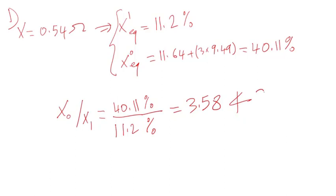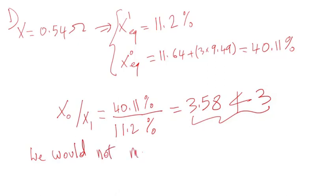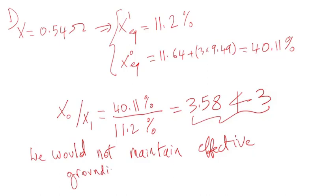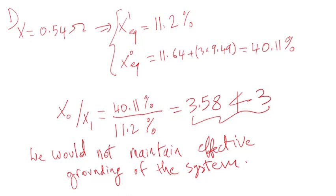The ratio calculates to be 3.58, which is not less than three. So with this neutral grounded reactor, we would not maintain effective grounding of the system. Therefore, we don't need to check the second condition — the ratio of the zero sequence resistance to the positive sequence reactance.